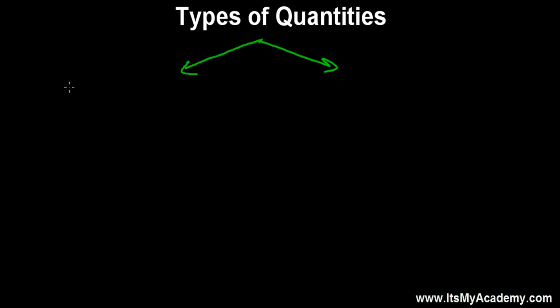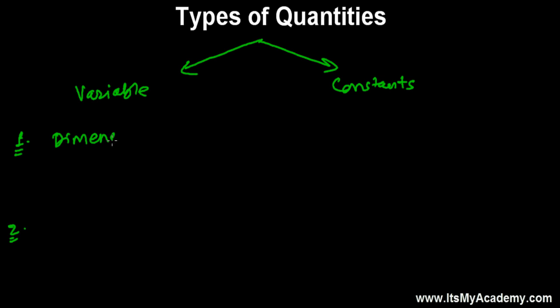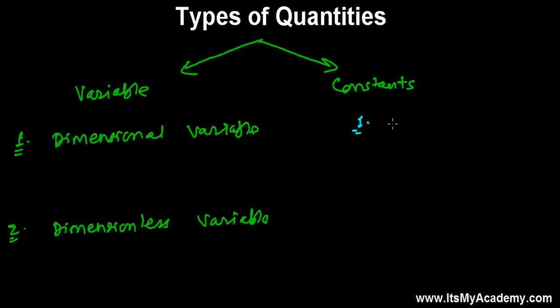After learning to write the dimension formula of different quantities, now let's learn the types of quantities based on dimension. Based on dimension analysis, I will categorize them into four types — but majorly first into two sections: variable quantities, whose value changes, and constants. Variable quantities can have dimension or not, giving us dimensional variables and dimensionless variables. Similarly, constants can be dimensional constants or dimensionless constants.